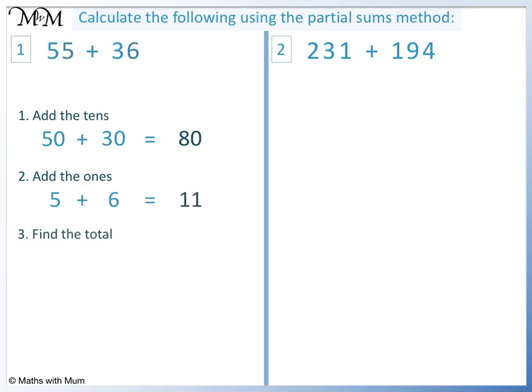Finding the total: 80 plus 11 equals 91. So the answer is 91.